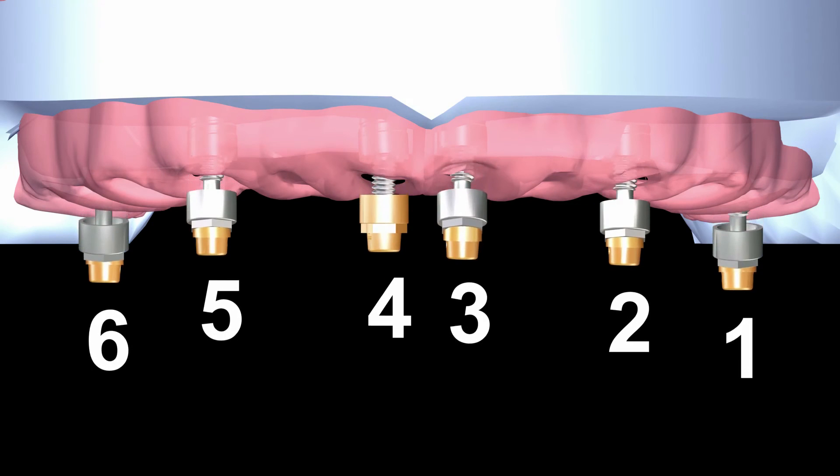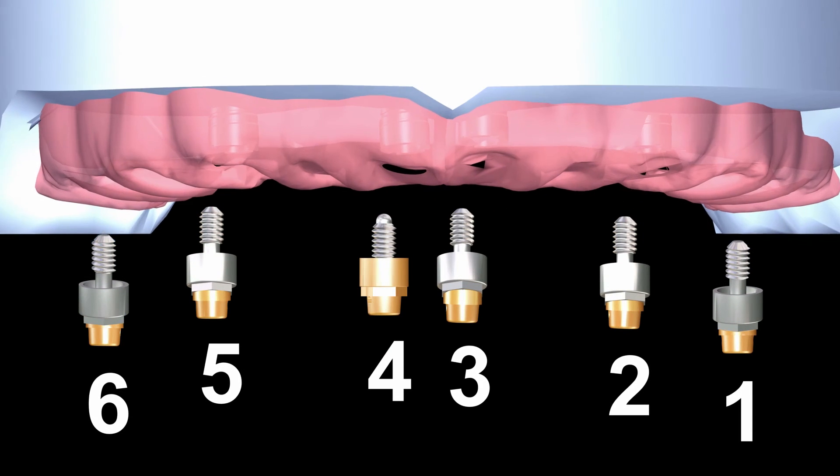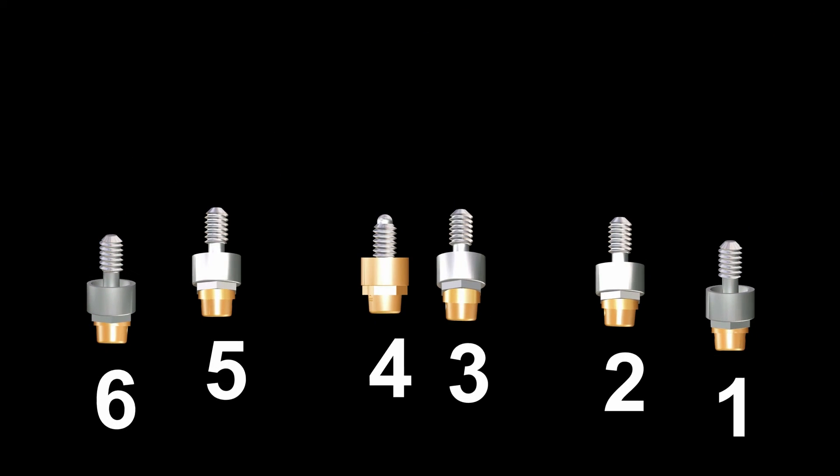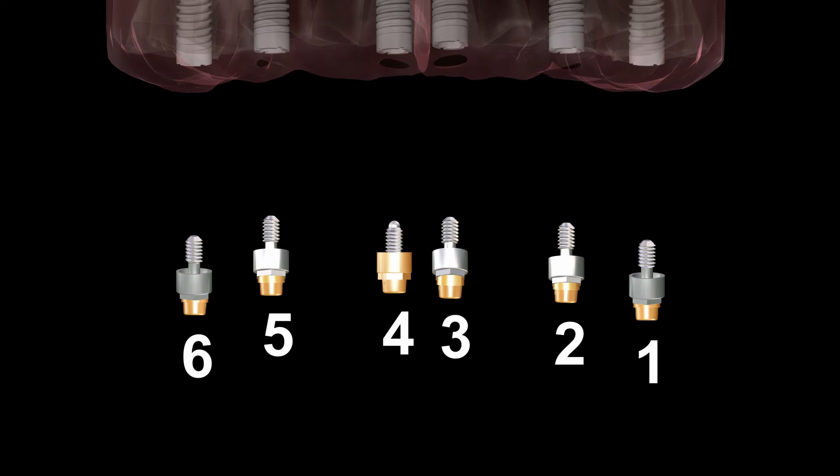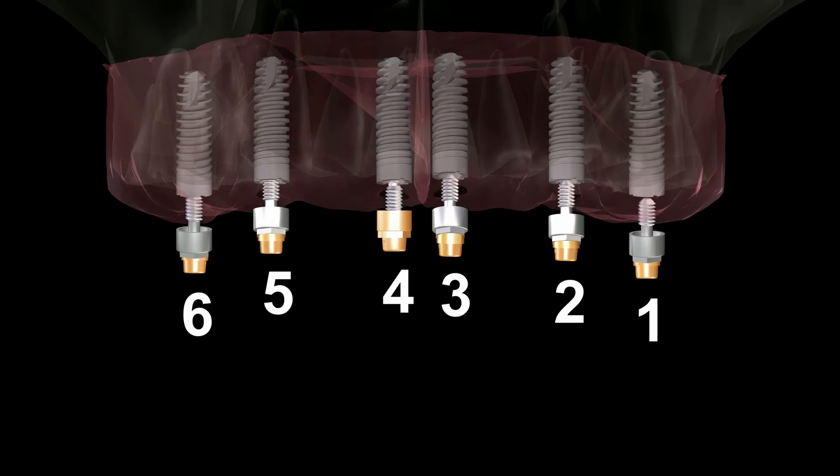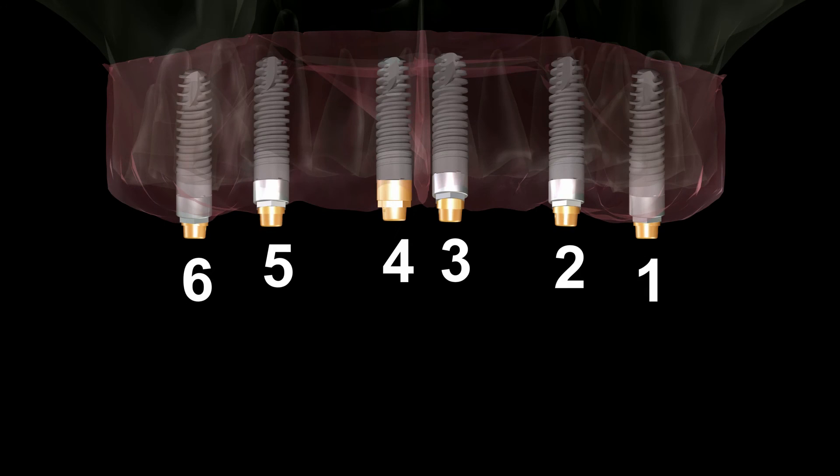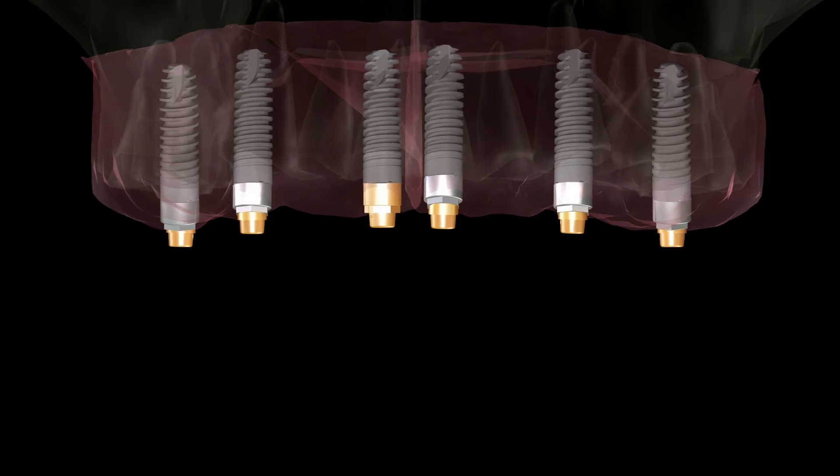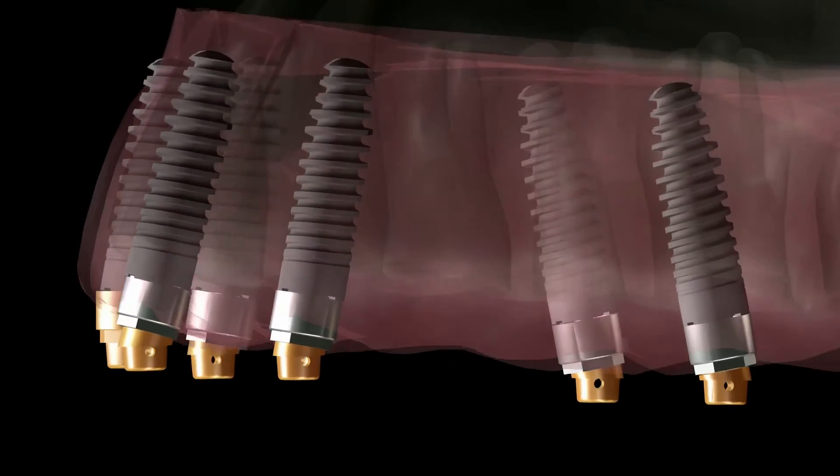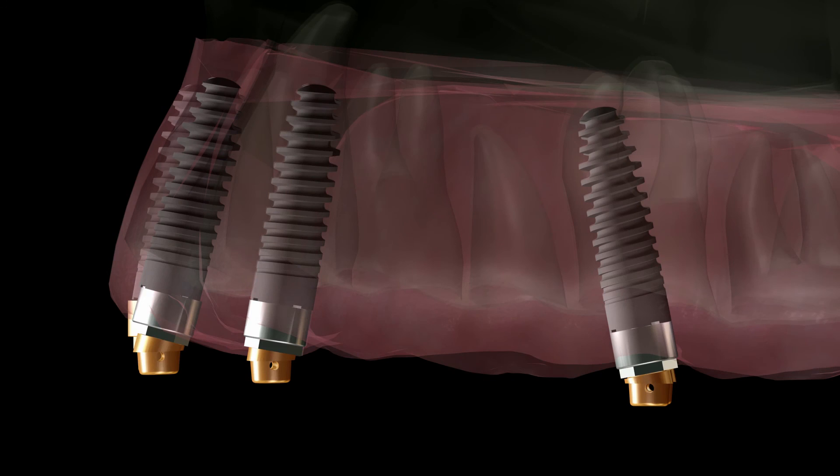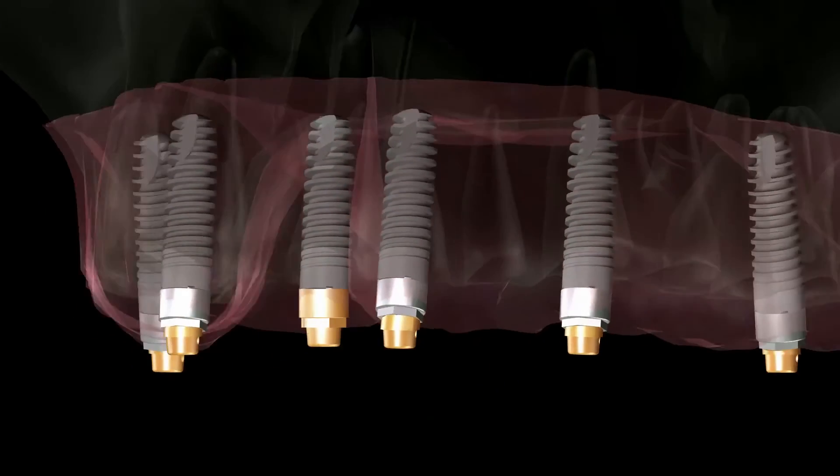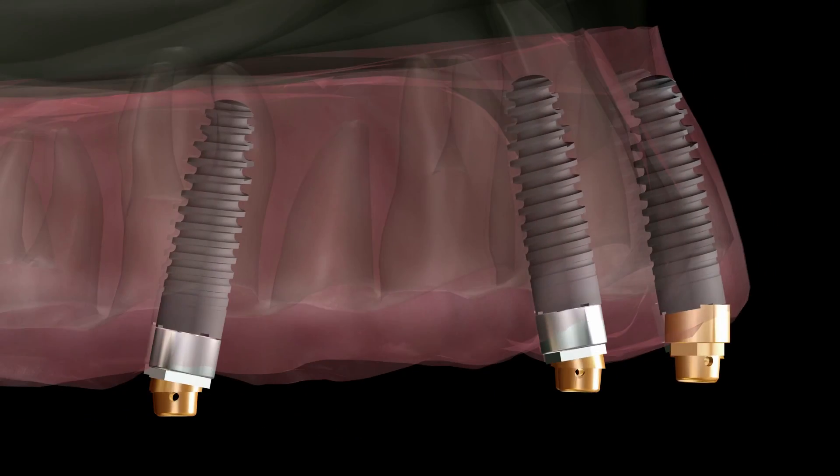It is best to unscrew each abutment from the model, one at a time, to be sure that they are transferred into the correct implant and tightened to 20 newtons of torque. When observed from several angles, it is apparent that all the ERA attachments are optimally parallel so that the insertion of the overdenture is easy and the males can provide a longer life.